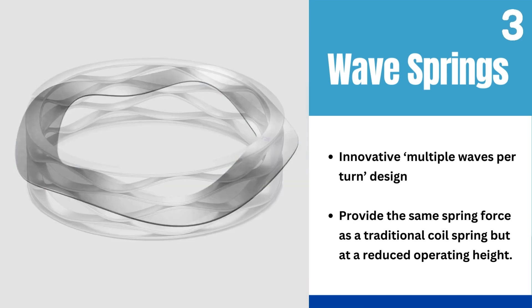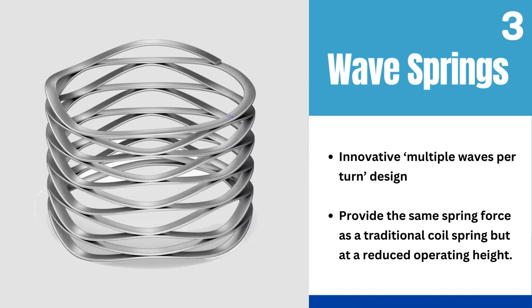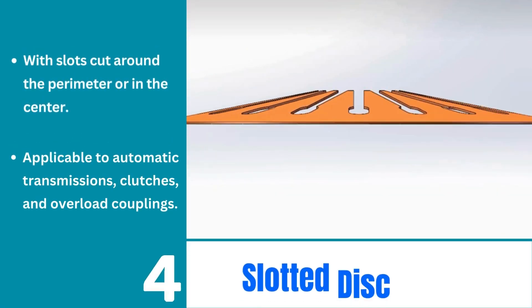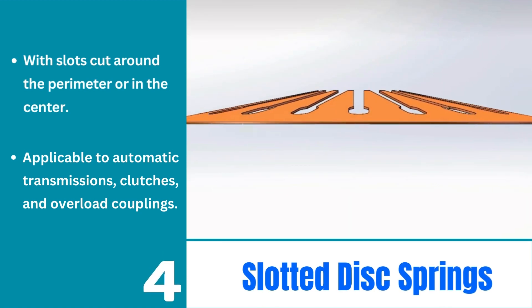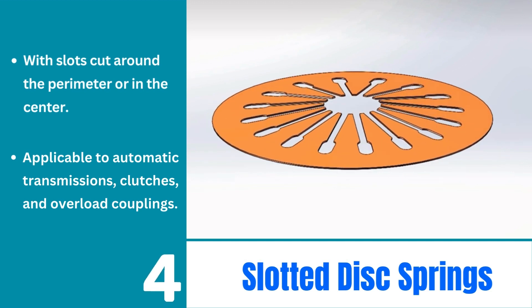Lastly, we have slotted disc springs, a type of spring with slots cut around the perimeter or in the center. These slots can be straight or curved and are widely applicable to automatic transmissions, clutches, and overload couplings.